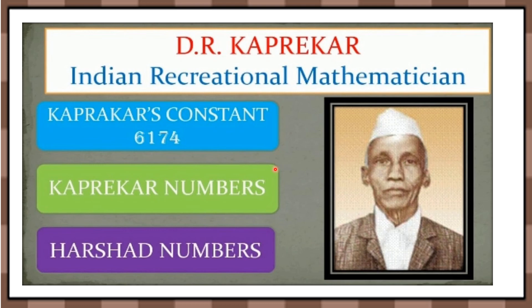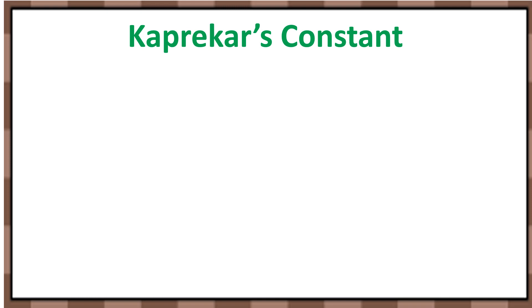Now let's see about Kaprekar's constant — the number 6174, the mysterious number. Let's see how D.R. Kaprekar devised the process for this mysterious number. Let's consider any 4-digit number. The only rule is we should not take numbers with all repeated digits, like 1112, 2222, 3333, and so on. Other than that, you can take any 4-digit number. Let's consider 1879.